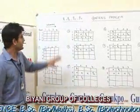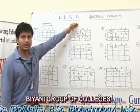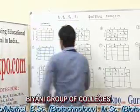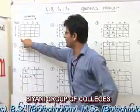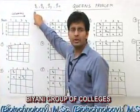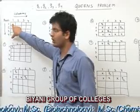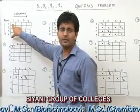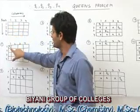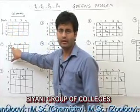In the 4-Queens Problem, we have 4 queens Q1, Q2, Q3, and Q4, and we have a 4-by-4 chessboard. For queen Q1, row 1 is the first valid position, so queen Q1 is placed in column 1.